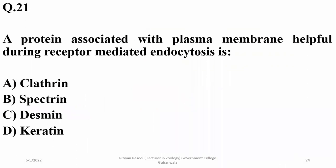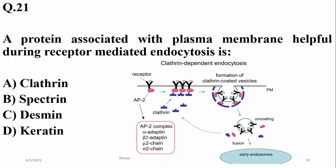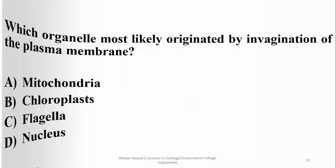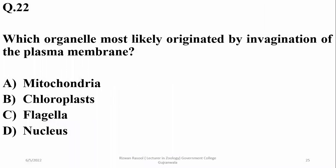Question 21: A protein associated with plasma membrane that is helpful during receptor-mediated endocytosis — the common feature of cell membrane during this process is clathrin protein, which plays a major role in the intake of material via receptor-mediated endocytosis.